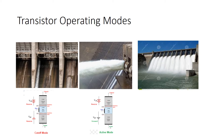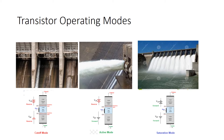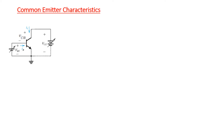The third mode is when both junctions are forward biased, so there is no restriction in the flow of current — just like full water flowing through the dam. This is called the saturation mode. So basically, a transistor is used for two purposes: in cutoff mode it is off like a switch, and in saturation mode it is fully on like a switch. The active mode is used for amplification.